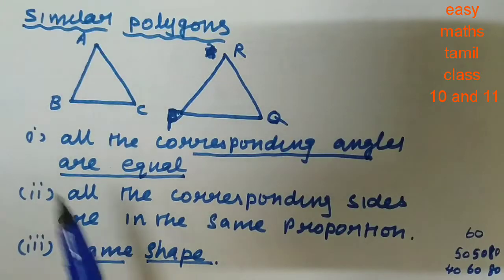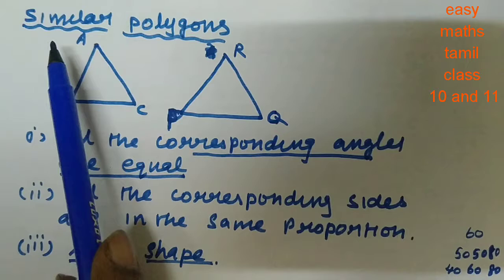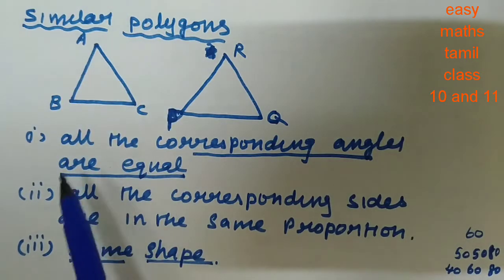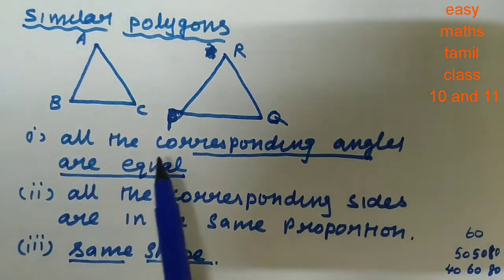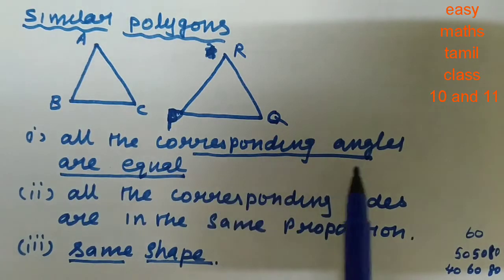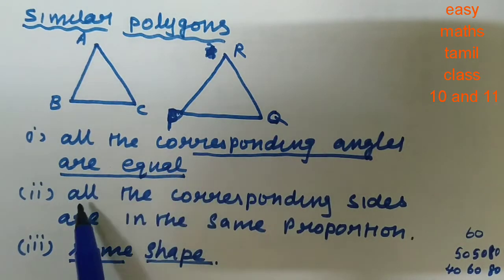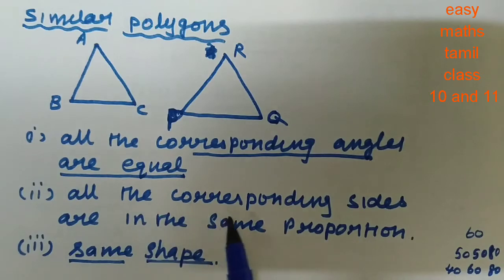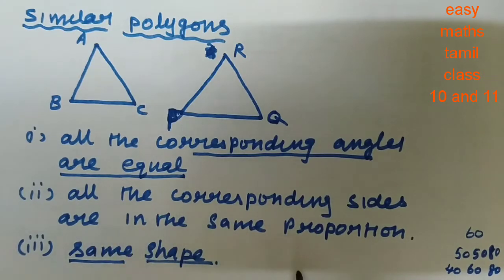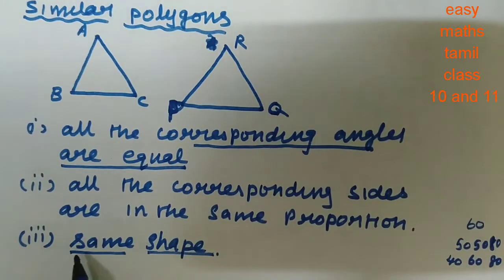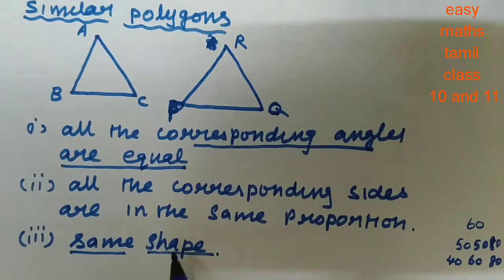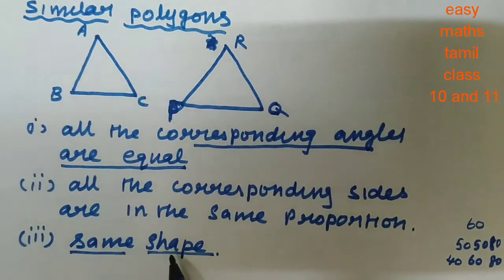A polygon is said to be similar when all the corresponding angles are equal, all the corresponding sides are in the same proportion, and the two geometrical figures should be of the same shape.